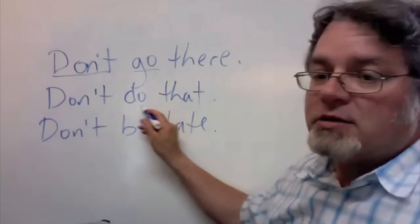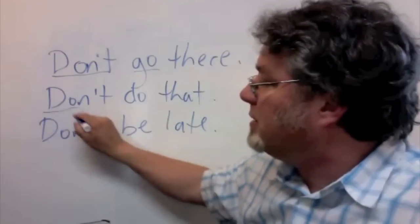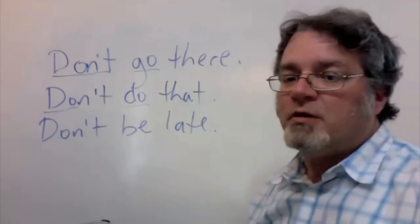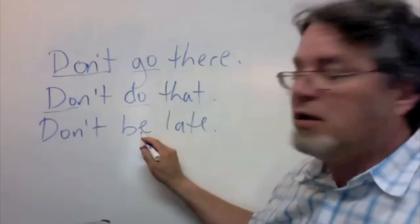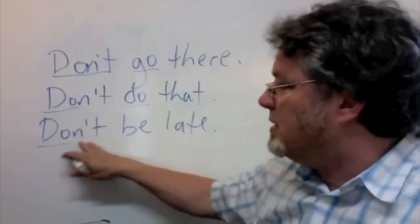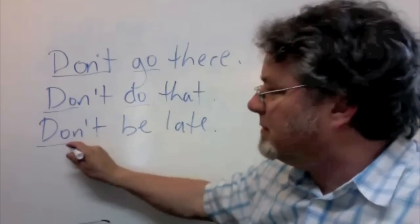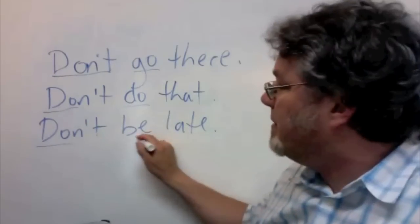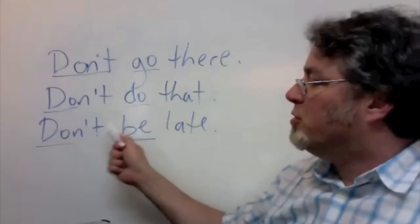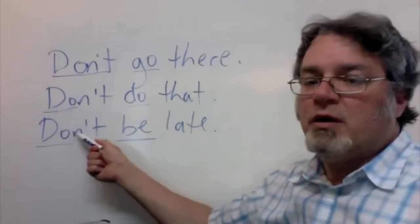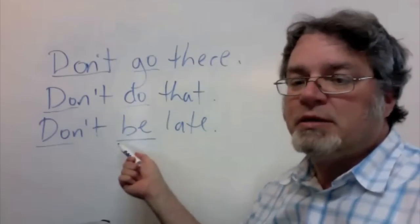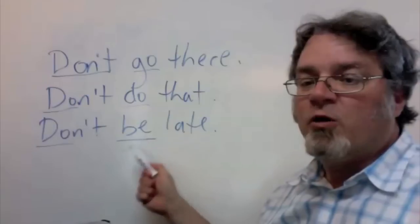Don't do that. The helping verb here is do. It's negative. And then the main verb is do. Don't be late. The helping verb here, do not. It's negative, but the helping verb is do. And the main verb is be. The only time you can put the helping verb do and a main verb be together is when forming a command.